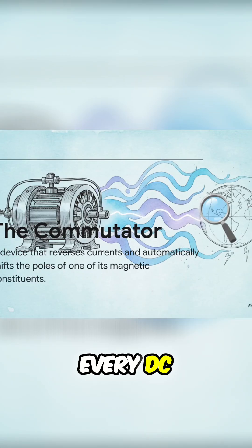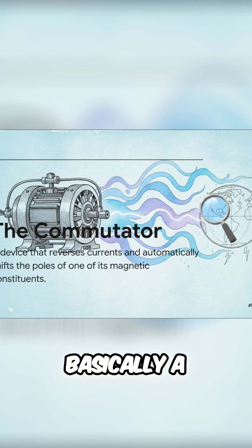And right at the heart of every DC motor was this thing, the commutator. It was basically a clunky spinning mechanical switch that was constantly sparking, creating friction, and wearing itself out.